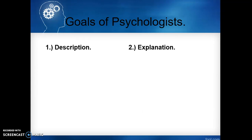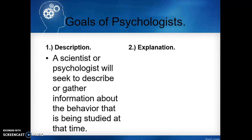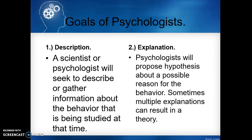There are four goals of psychologists. The first is description: a scientist or psychologist will seek to describe or gather information about the behavior being studied — for example, understanding why a person may not like horses or going in the ocean. The second is explanation: psychologists propose hypotheses about a possible reason for that behavior, such as a negative experience in the ocean as a child, or being thrown off a horse. Sometimes there can be multiple explanations that result in a theory.